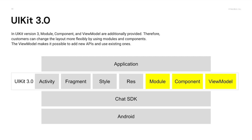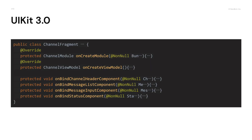However, in UIKit version 3, module, components, and ViewModel are additionally provided. Therefore, customers can change the layout more flexibly by using modules and components. The ViewModel makes it possible to add new APIs and use existing APIs. UIKit version 3 provides methods that bind data and events for each component in a fragment, so customers can override methods to customize binding for each component. The creation of ViewModel and module is also changed to protected from private, so customers can use new APIs and custom views.